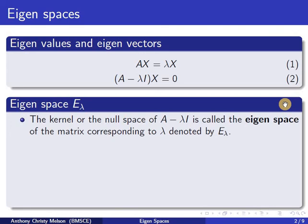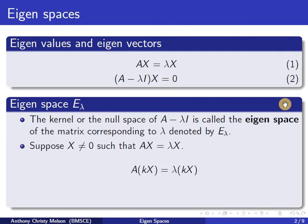When we say kernel or null space, it means all possible solutions of equation 2 — that is, it includes the zero solution also. Therefore, the Eigen space E_lambda is the linear combination of all solutions of x.